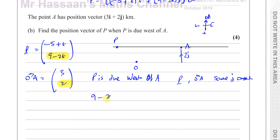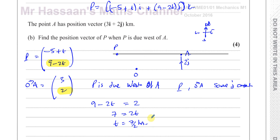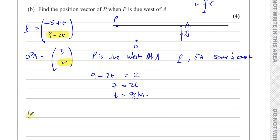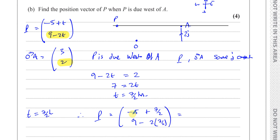So I can set the j component of p equal to the j component of A: 9 minus 2t equals 2. That gives 7 equals 2t, so t equals 7/2 hours. At t equals 7/2, P will be due west of A. Now we want the position vector of P at this time.